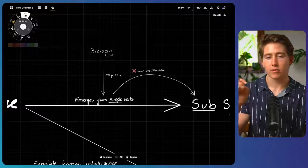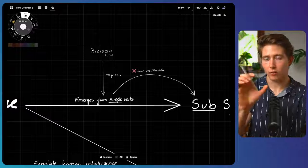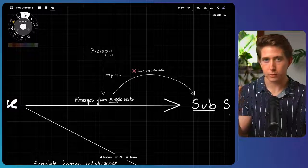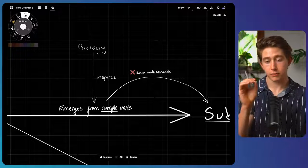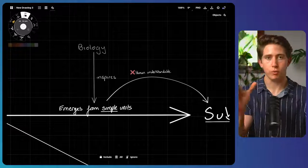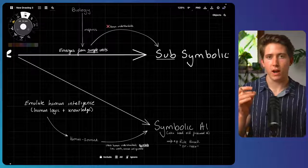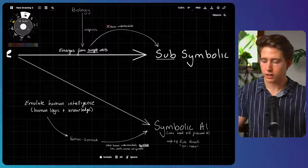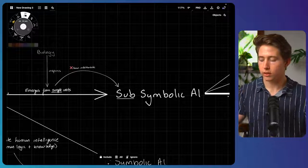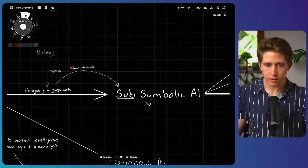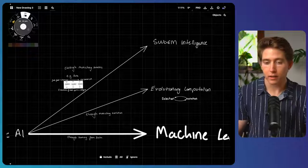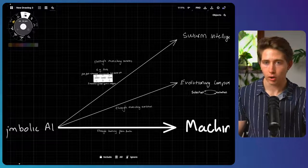And so computer scientists have tried to emulate this idea of emerging intelligence from the interaction or combination of simple subunits. And since it's emerging from very simple things, it's usually not actually very easy for a human to understand what's going on. Because unlike symbolic AI, where a human can effectively read the logic, in this kind of AI, it's not very easy to understand. And so we call it sub-symbolic. The easiest way to understand the emergence of this intelligence is just to look at the subtypes of sub-symbolic AI.